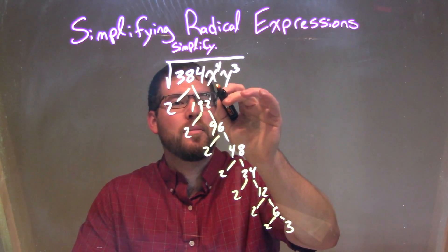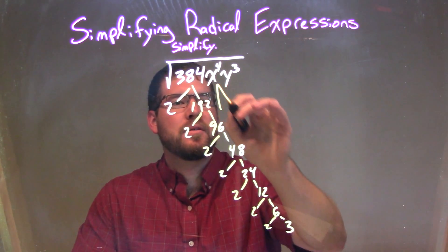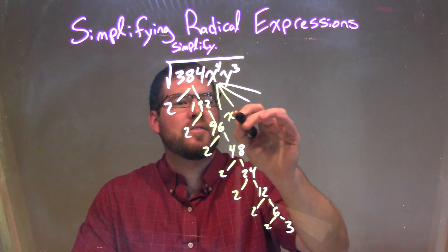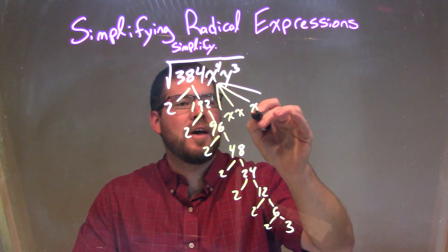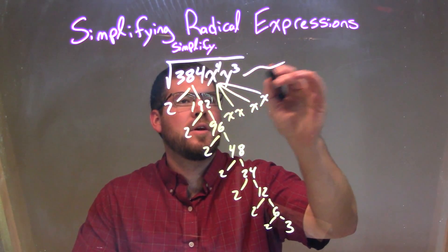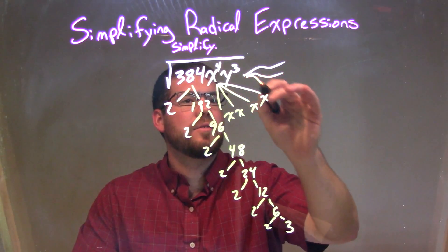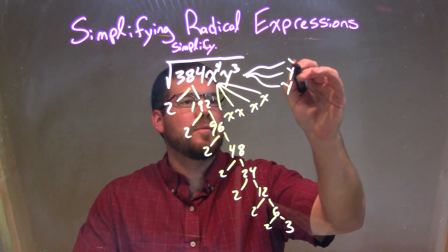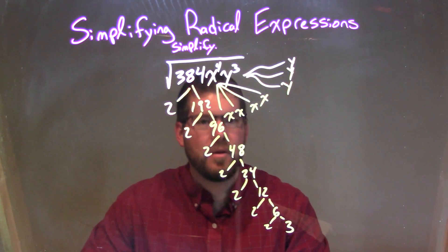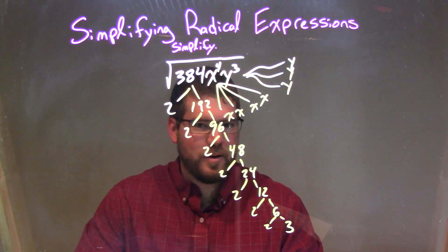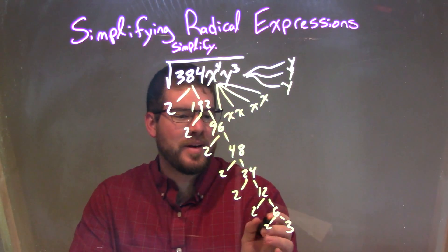The x's can break down to be x times x times x times x — that's x to the 4th — and y's break down to y times y times y. Let's circle some pairs here.